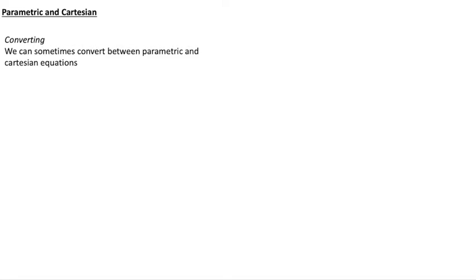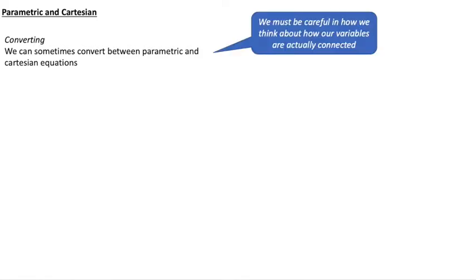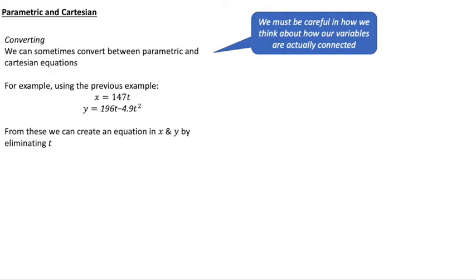You can imagine that we might sometimes want to convert between parametric and Cartesian equations. Cartesian means the familiar x, y type equations, or y as a function of x more usually in your studies so far. But if we do do this we need to be careful in how we think about how our variables are actually connected. So we'll have a look at using the previous example. We have x = 147t and y = 196t - 4.9t². Now we can create for this pair of parametric equations, we can create an equation in x and y by eliminating t.